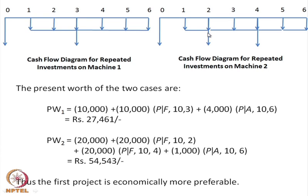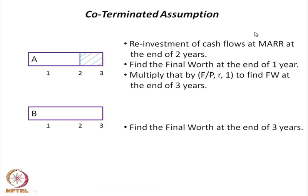Project B's present worth of Rs. 54,543 is much higher compared to project A's Rs. 27,461. Since they are all costs or cash outflows, project 1 is preferred to project 2. So if we have to apply the present worth cost comparison method, one way is to make the repeatability assumption — the same project is repeated after it is terminated. There is yet another approach called the co-terminated assumption.